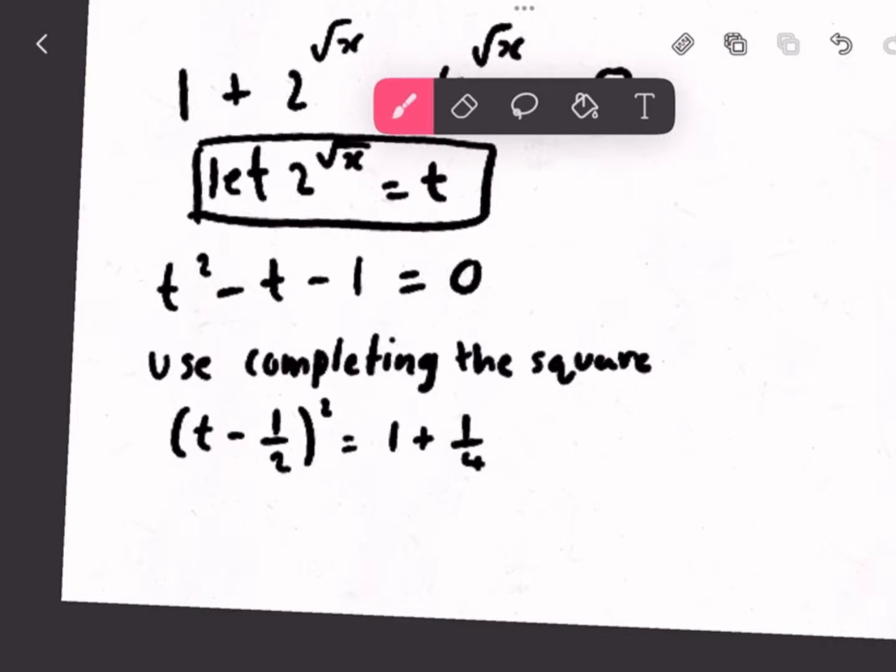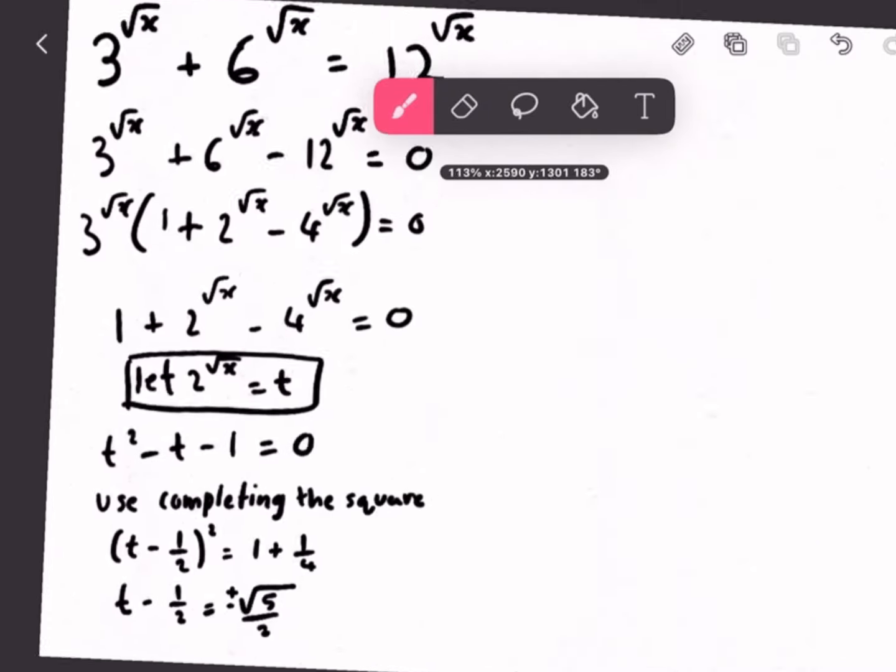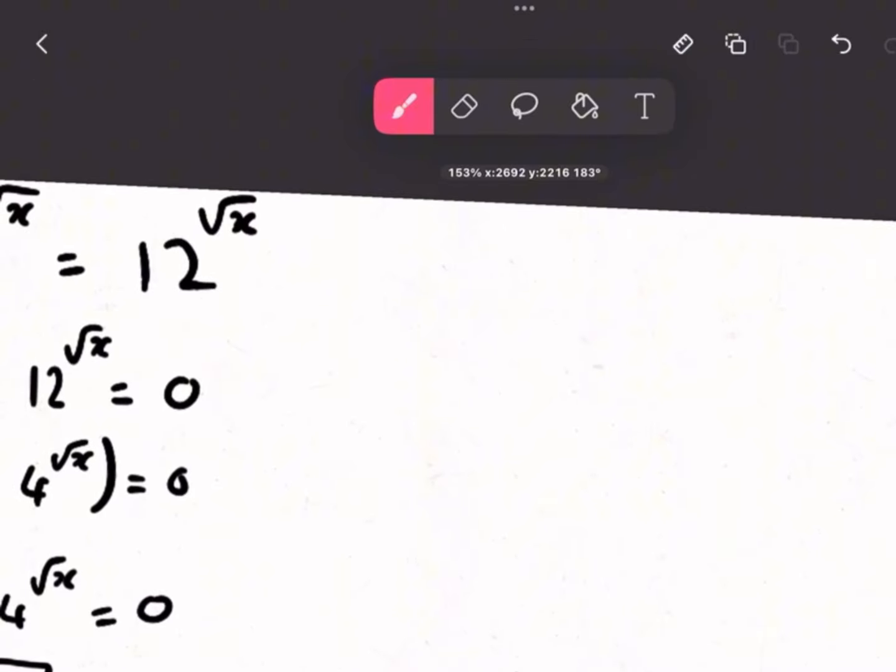So, if we simplify this, we should get t minus 1 over 2 equal to root 5 over 2. And obviously, we'll have to put plus minus root 5 over 2, as it's not a whole number.